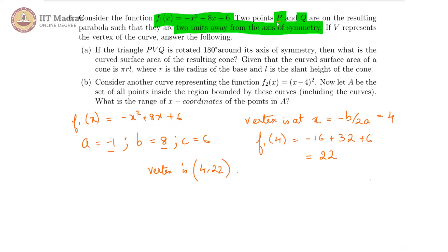Further, we are told that p and q are two units away from the axis of symmetry. So the axis of symmetry is along x equals 4, which means p and q will be at x equals 2 and x equals 6, 4 minus 2 and 4 plus 2. So these points are going to be p is 2 comma f1 of 2, which is 2 comma, if I now substitute f1 of 2, I will get minus 4 plus 16 plus 6.